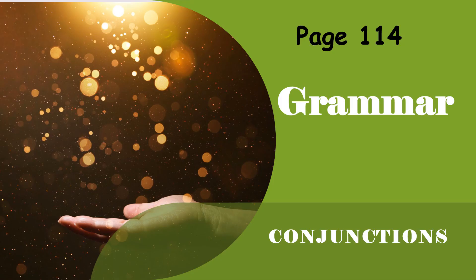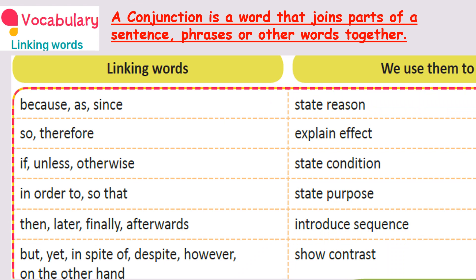In this lesson, you have conjunctions on page number 114. All of you open to page number 114. Do you see this in page number 114, all of you? Linking words — can you see? Linking words are nothing but conjunctions, which you have learned in classes 1, 2, 3, and 4 also. Now you are learning in class 5.